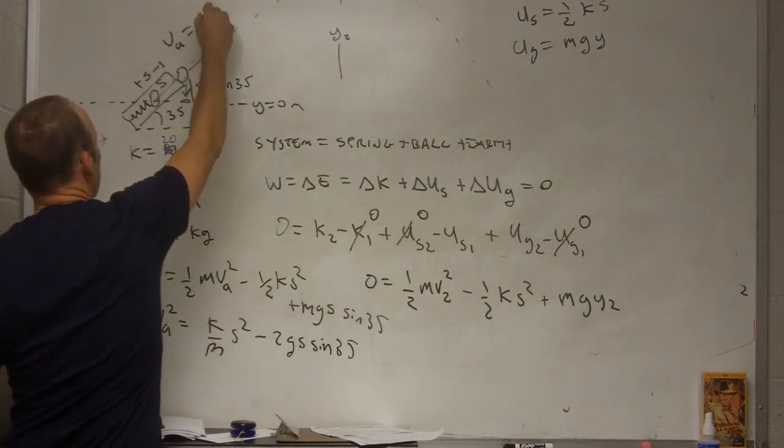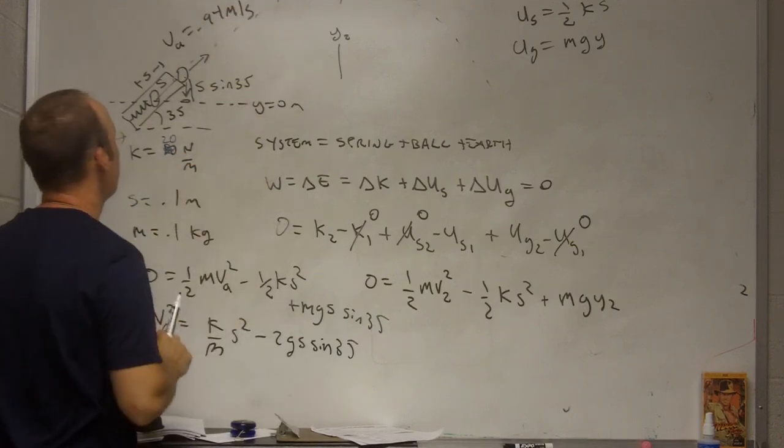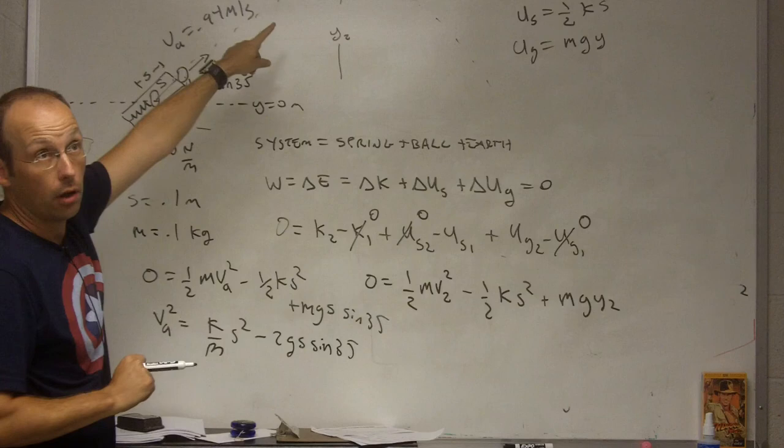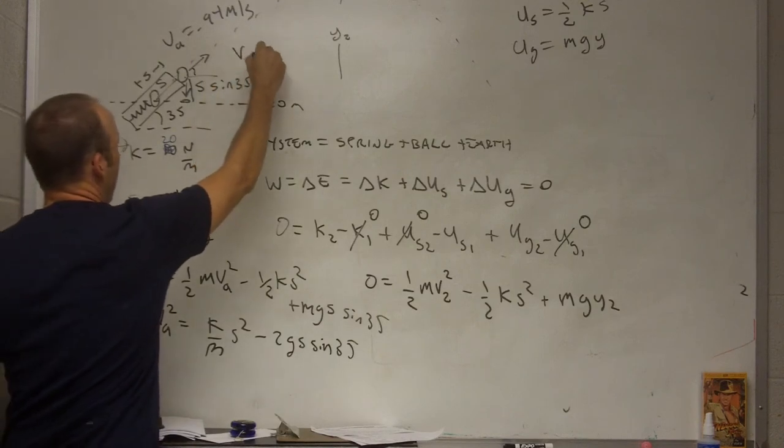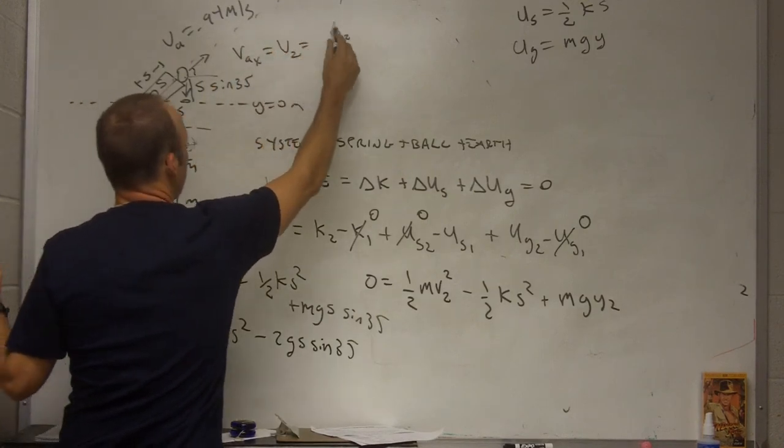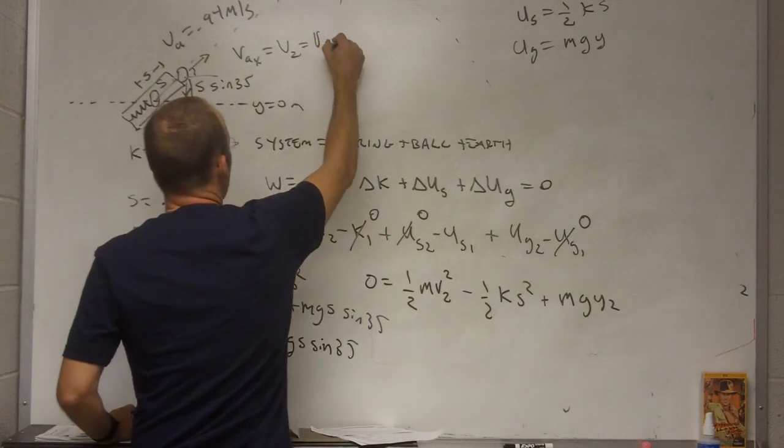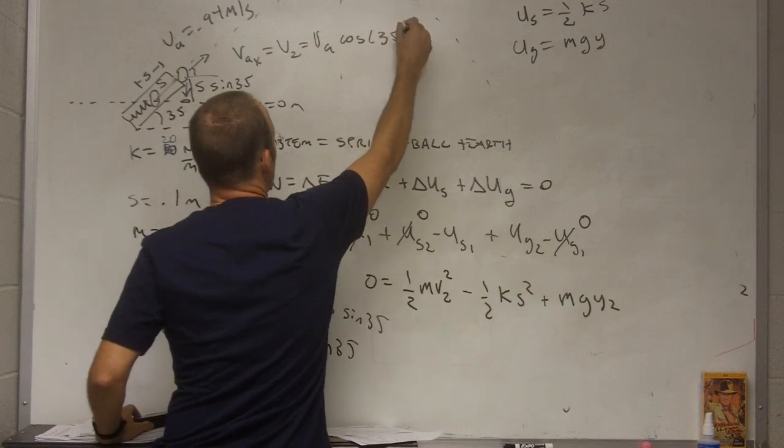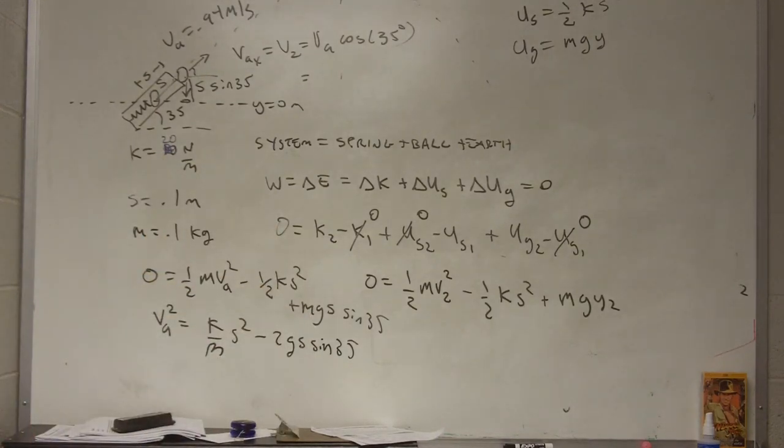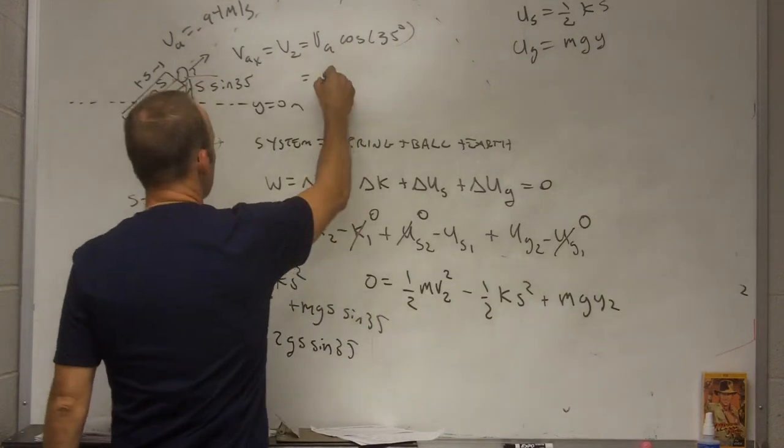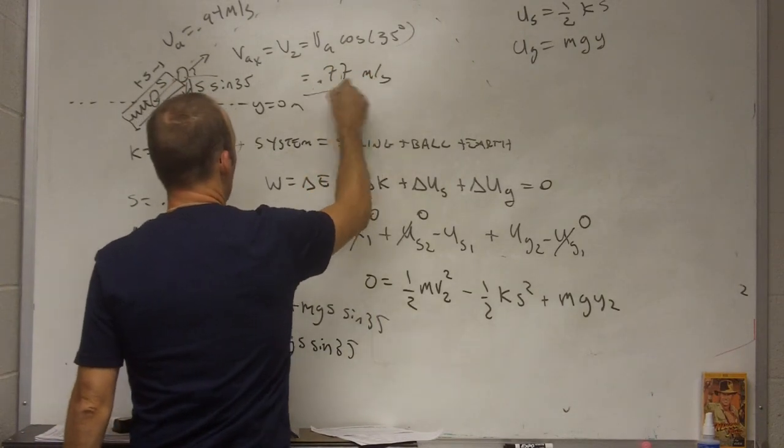0.94. So, the velocity right here, VA, 0.94 meters per second. So, now, what's the velocity at the top? Well, what's the x component of this velocity? Well, that's going to be VAx equals V2 equals VA cosine 35 degrees. So, I can get the speed at the top. So, that's going to be, let me just plug that in. 0.77. So, that's the velocity at the top.